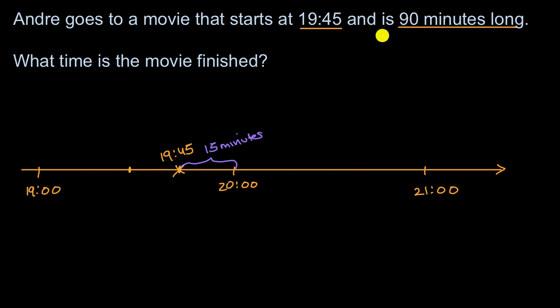Well, 90 minus 15 is 75. So then there's another 75 minutes left. Well, 60 of those 75 are gonna get you to the next hour. So then it's going to be like this. So then you're going to have another 60 minutes to get to the next hour.